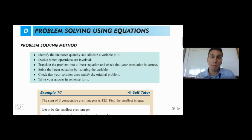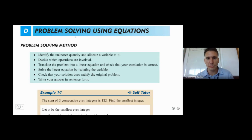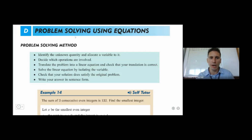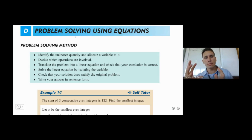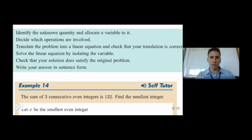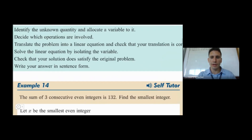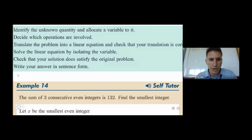Today we're talking about problem solving using equations. Problem solving is a very big topic in maths — it can't be specified to one area, it comes up everywhere. Specifically, what we're talking about here is taking a worded problem, rewriting it using algebra, forming an equation, and solving that. For example: the sum of three consecutive even integers is 132 — find the smallest integer.